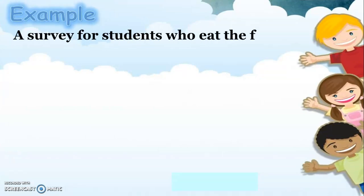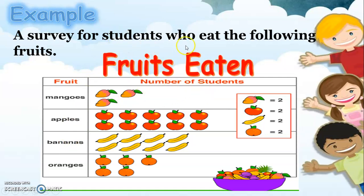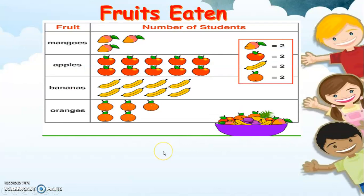A survey of students who eat the following fruits. This is our pictograph. This column shows the name of fruits, and this column shows the number of students. The title of our pictograph is Fruits Eaten. Here is the key: each picture of mango, apple, banana, and orange is equal to two.